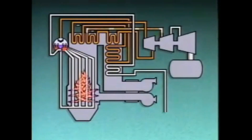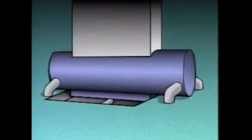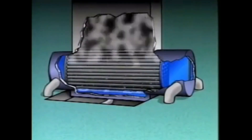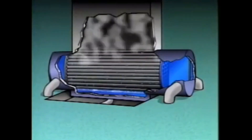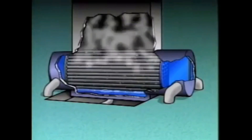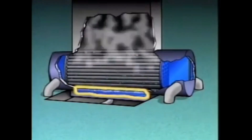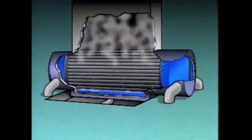After it is reheated, the steam flows to the intermediate pressure, or IP, section of the turbine, and then through the low pressure, or LP, section. From the low pressure section, the spent steam flows into the condenser. Inside the condenser, the steam flows over tubes that contain cooling water. The water in the tubes absorbs heat from the steam, and the steam condenses back into water. The water is collected in the bottom of the condenser and pumped back to the boiler to begin the cycle again.